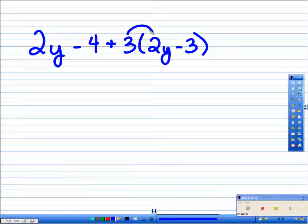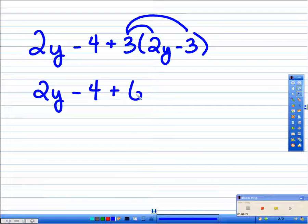This is a 3, so we're going to distribute it here and here. And what we end up with is I'm going to rewrite this: 2y minus 4 plus 6y minus 9.